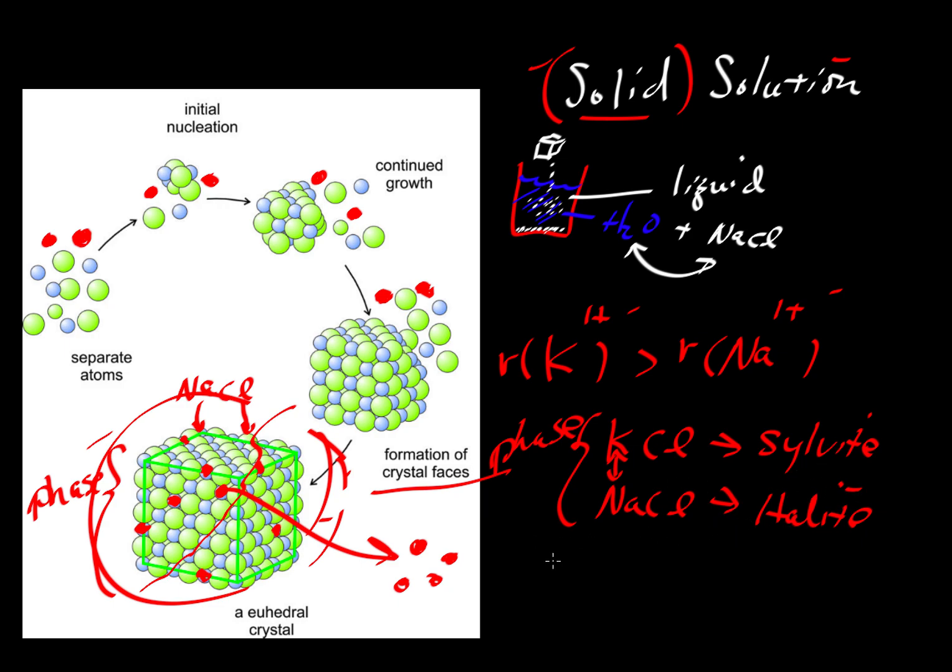So we would have one phase. We would have to call it a different name. We could simply call it a chloride mineral of some kind, and that chloride mineral would have two components: it would have potassium chloride and sodium chloride components. This is the beginning of our introduction of the idea of components, which we'll look at later in other videos.